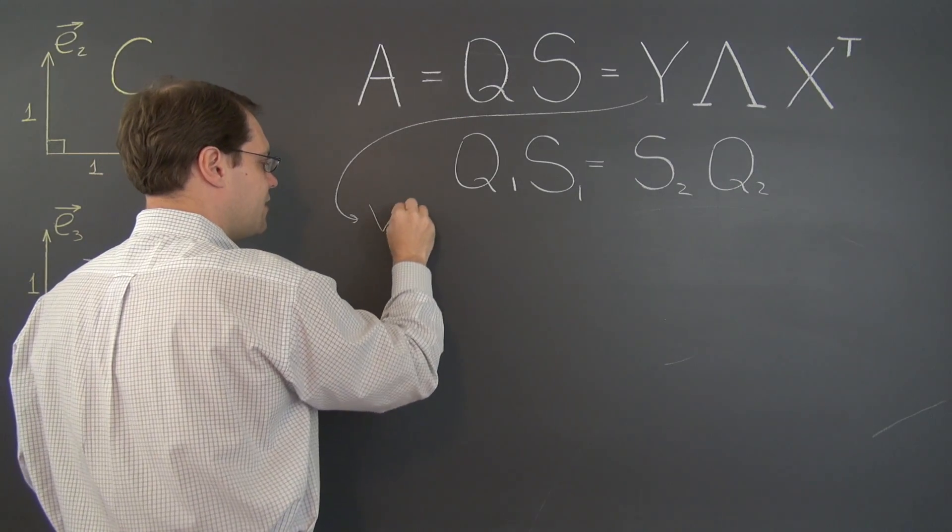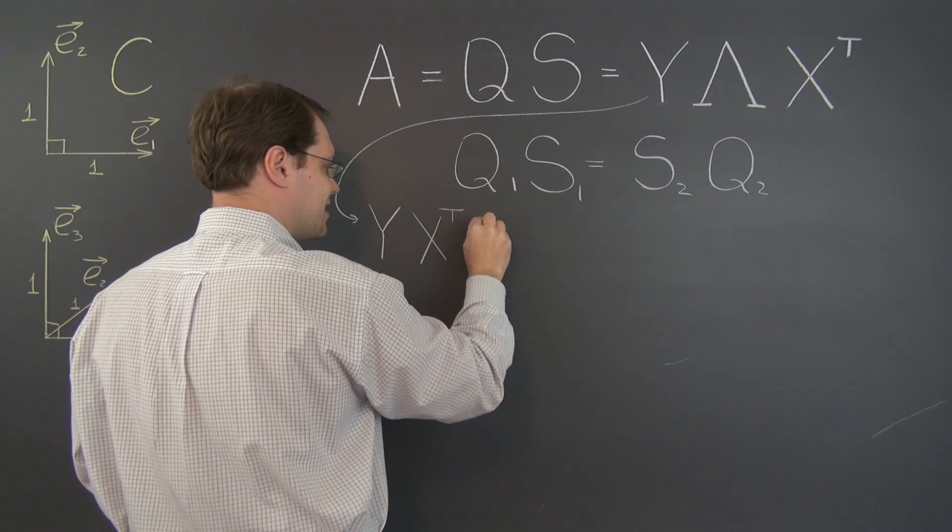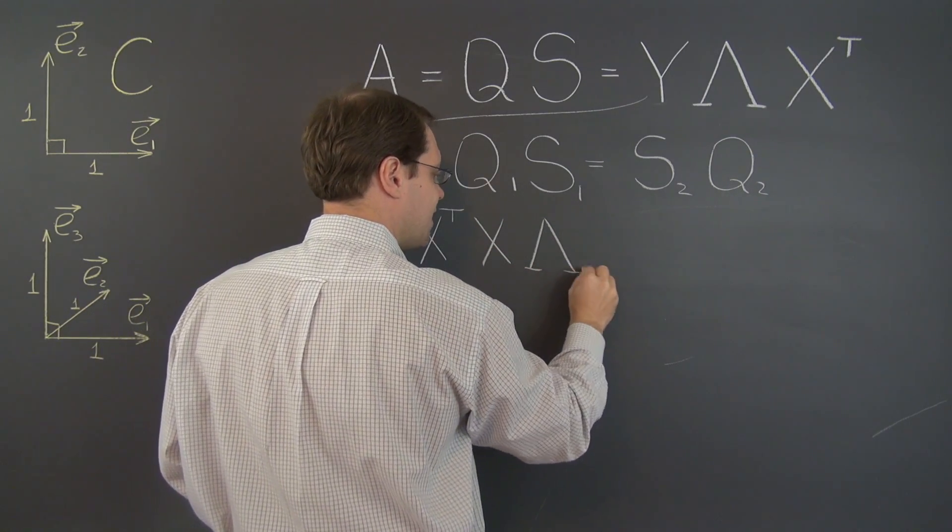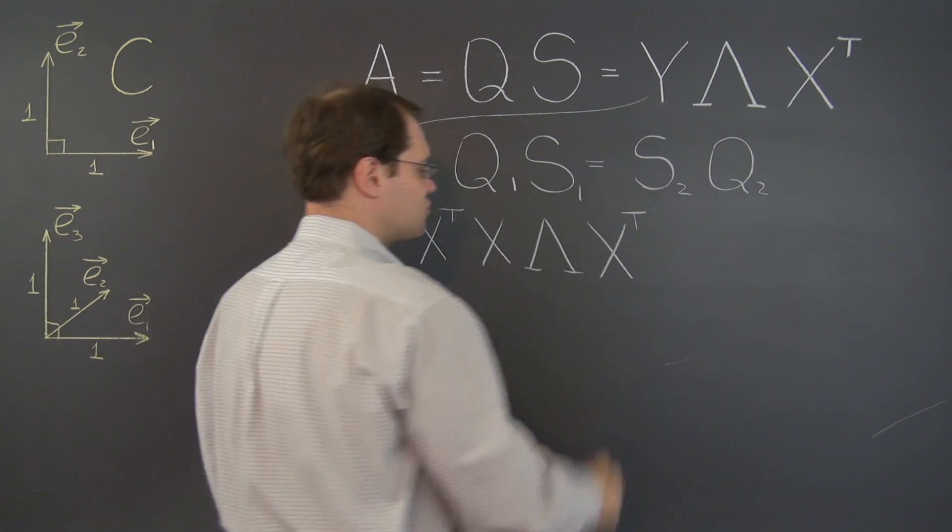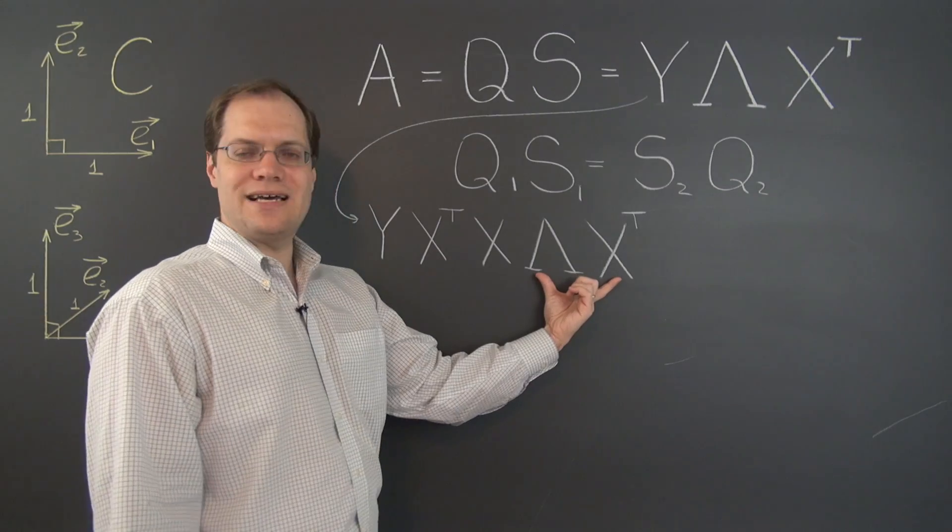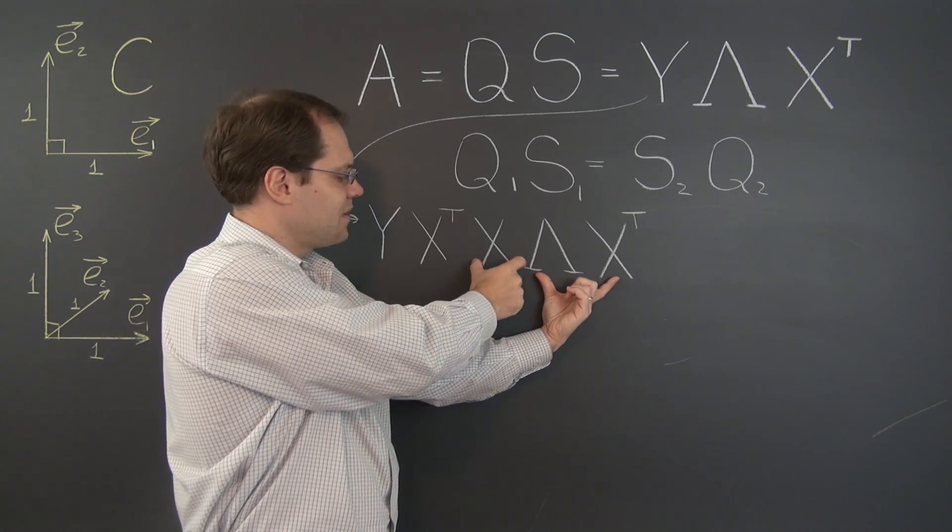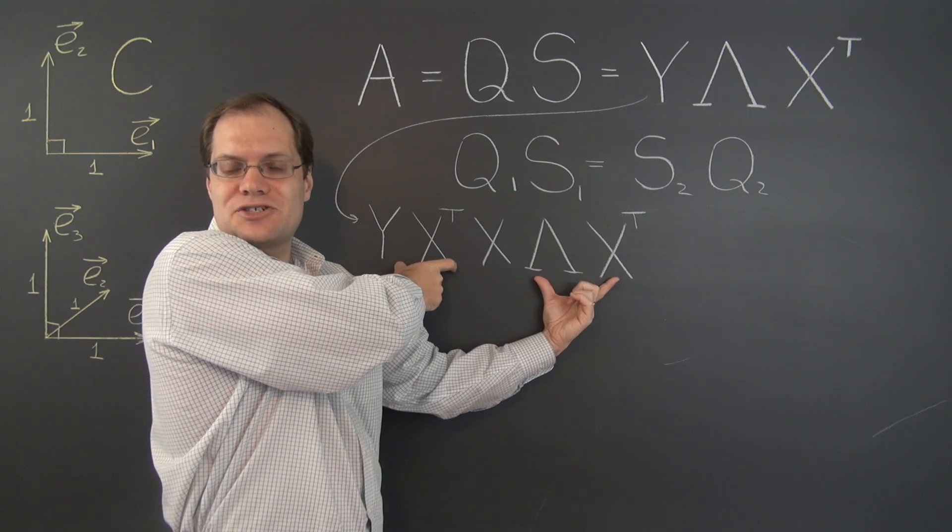You would say Y X transpose X lambda X transpose. So here's our lambda X transpose. I pulled X out of Y and to make up for it, I threw an X inverse, which is X transpose.